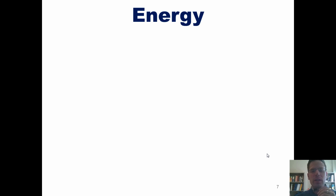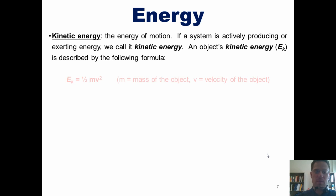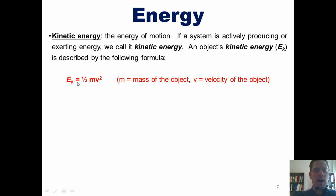We learned in our previous video that kinetic energy can be described mathematically by using this formula: E sub k, kinetic energy, equals one half times the mass of an object multiplied by its velocity squared.